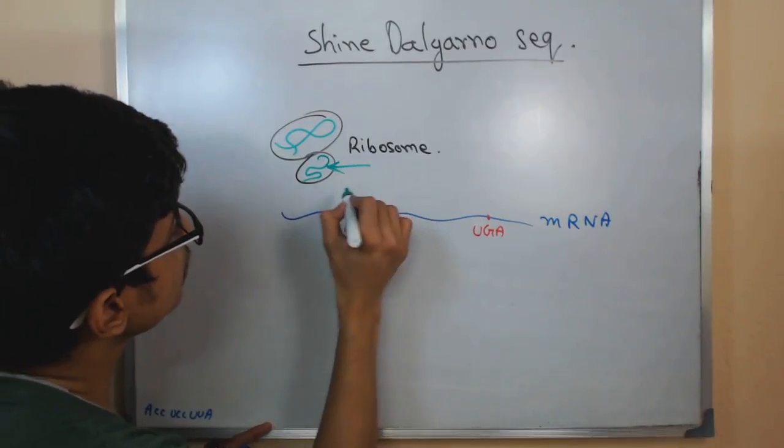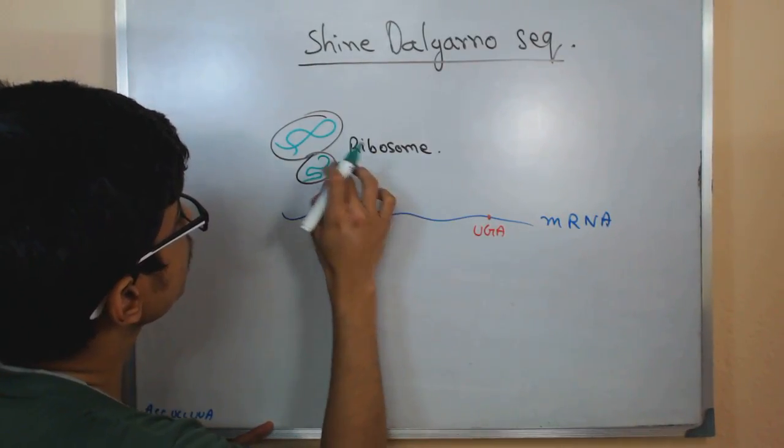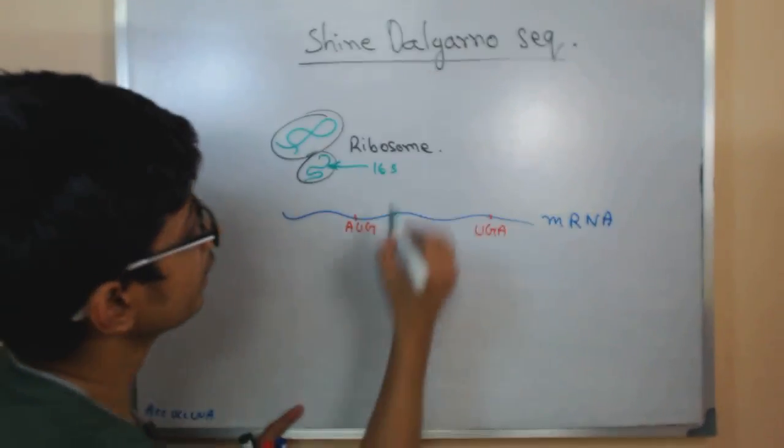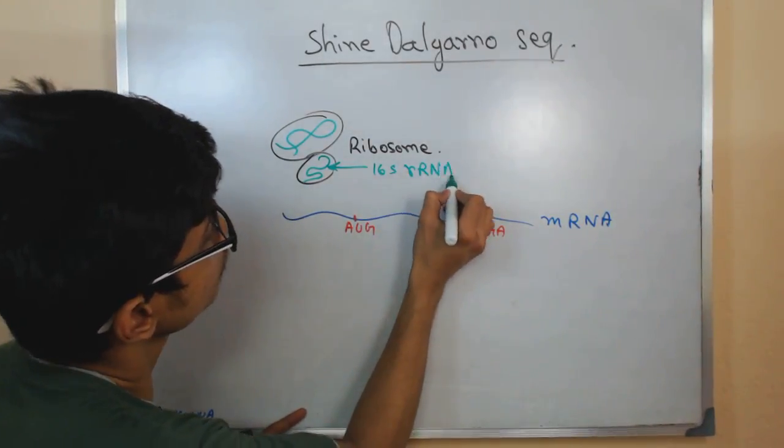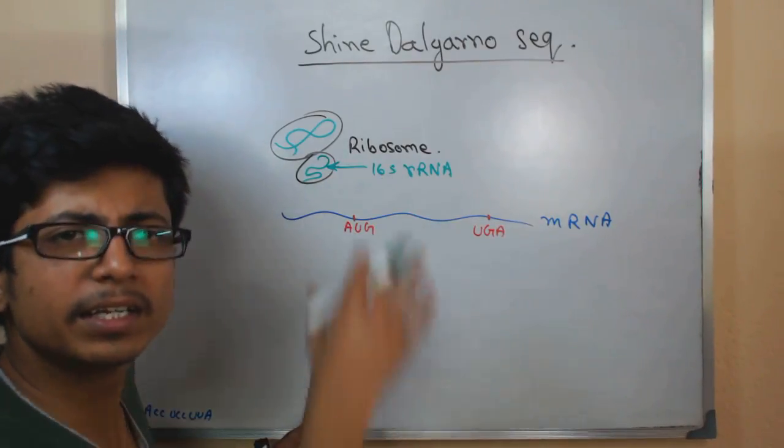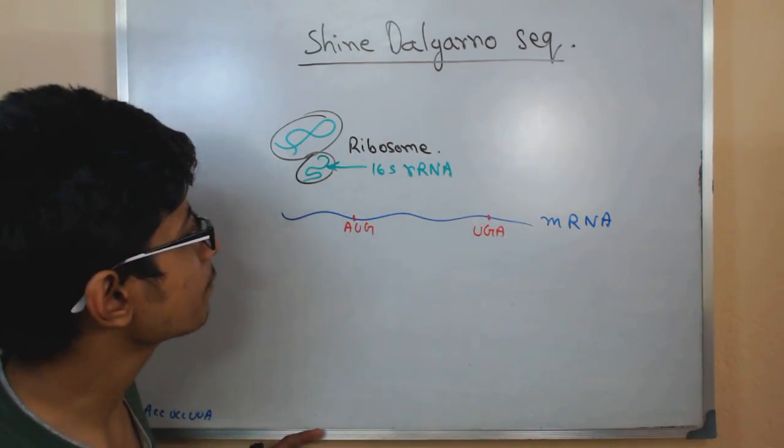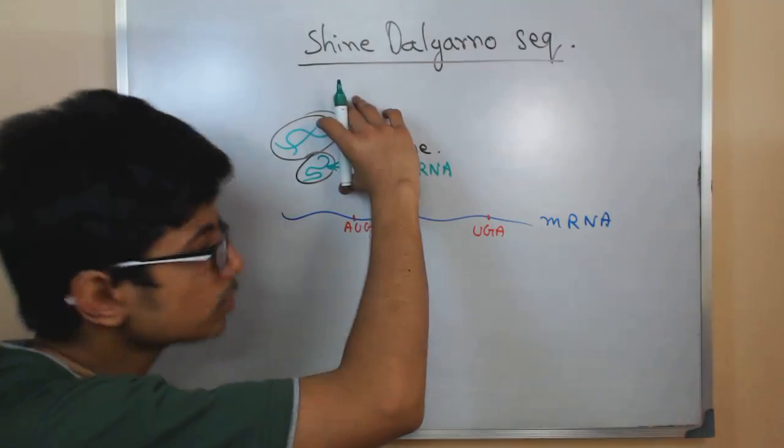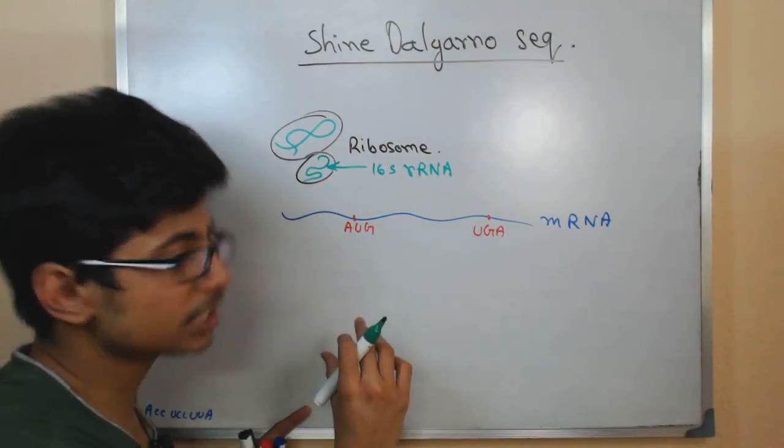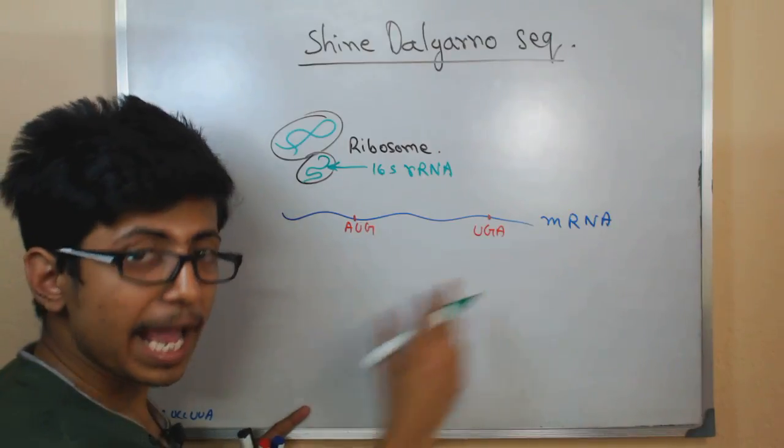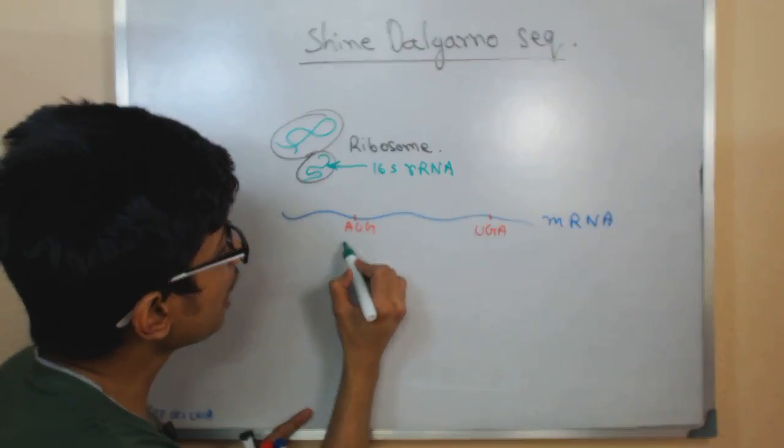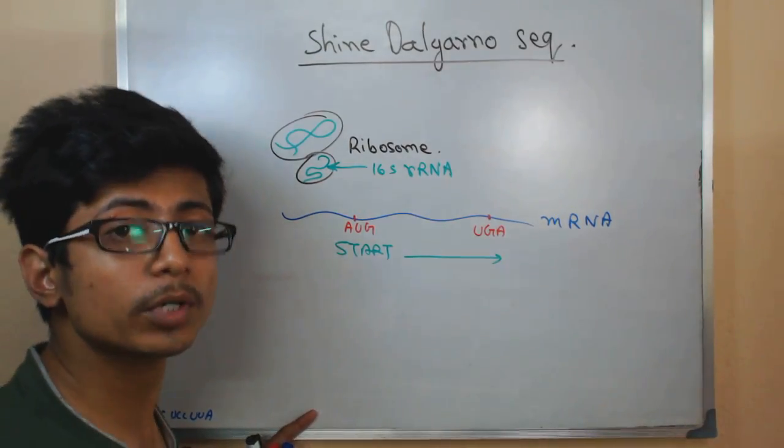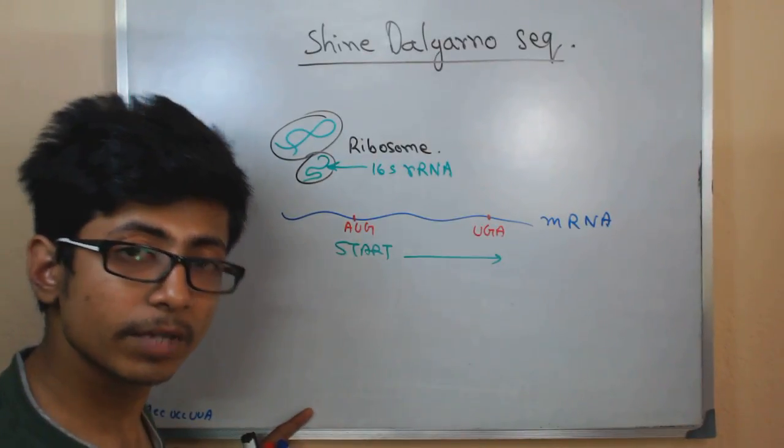So the rRNA in this subunit, let's say in this subunit is 16S rRNA. In the 16S rRNA, there are different sequences also present there. Now the idea is this ribosome should be attached with this mRNA and it should attach itself with the start codon to initiate the translation or protein synthesis process.